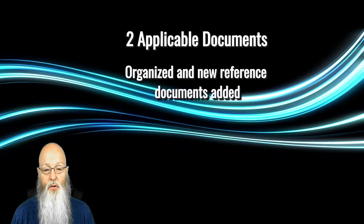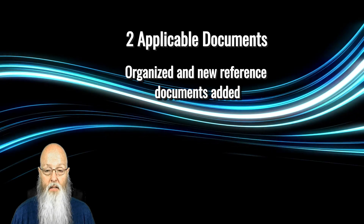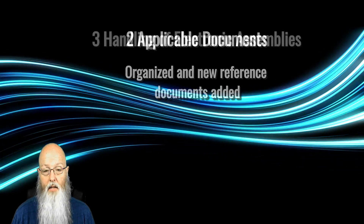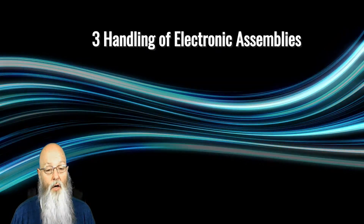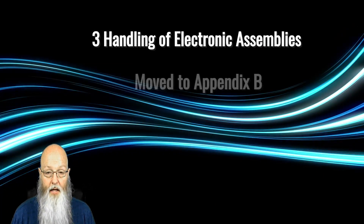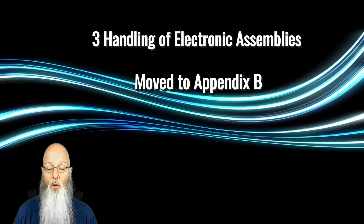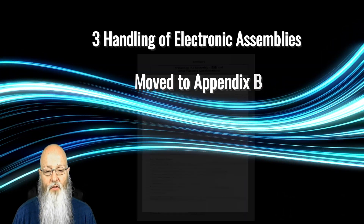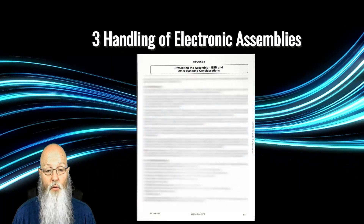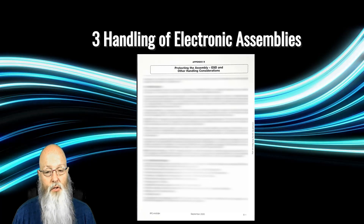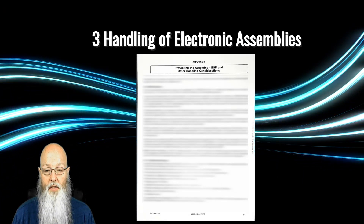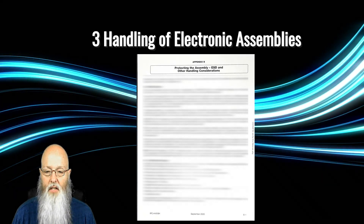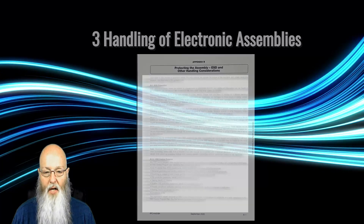Paragraph 2 has been reorganized and new, other referenced documents have been added. Paragraph 3, Handling of Electronics, has been moved into Appendix B. The content of the section is good information, but there's no criteria or requirements in the section. As such, it's better as an appendix.